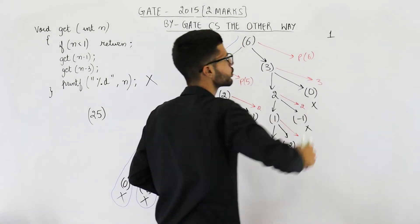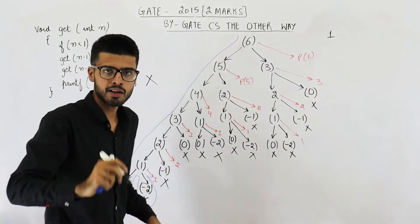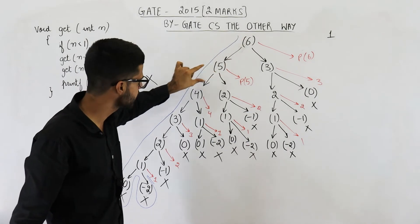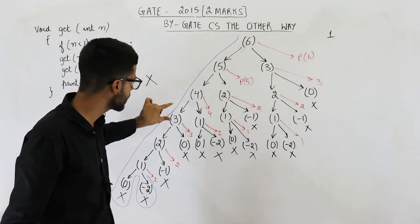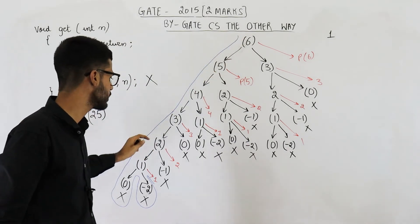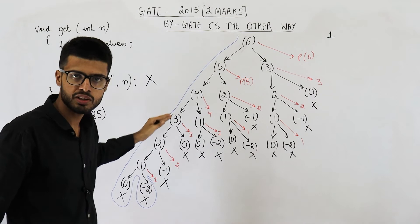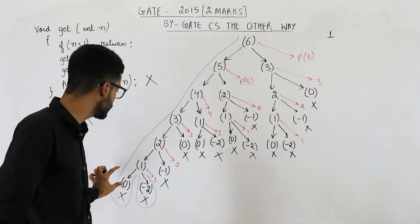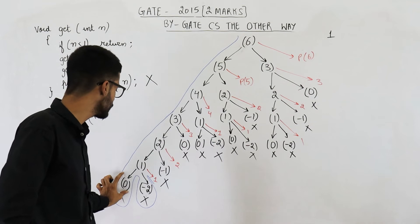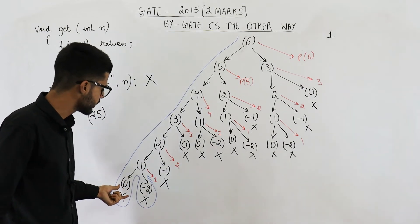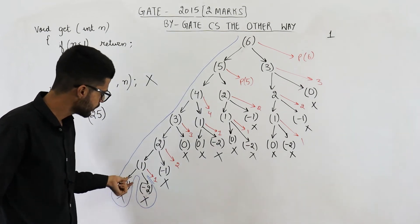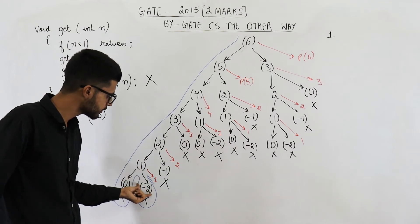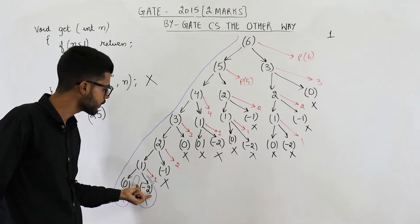I'm writing the output of the program here. That means first this function calls get(1), then get(1) calls get(0), then get(-2). All activation records are pushed onto the stack. Then get(0) ends, then get(-2) ends, then get(1) tries to print something.